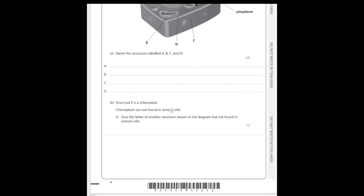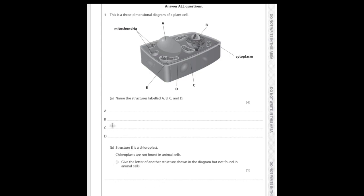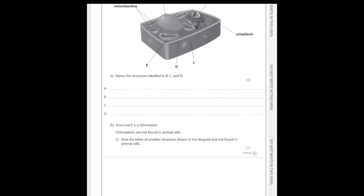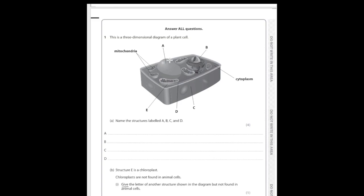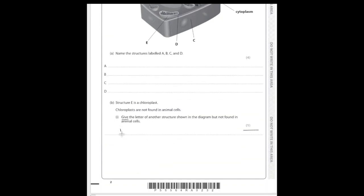I'm going to skim through the paper and only choose questions relevant to this video, but you can complete all the questions yourself. For question one we're only going to talk about part B, because A is just naming structures — we all know what 'name' means there. But B I thought was interesting: it's one mark, we see 'give,' and we get excited, thinking it's a free mark. Then we might write 'vacuole' — but that's wrong.